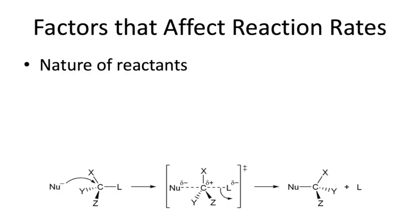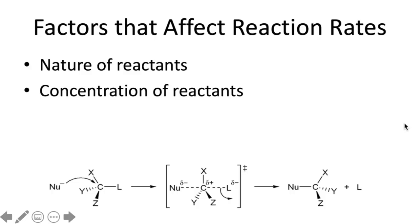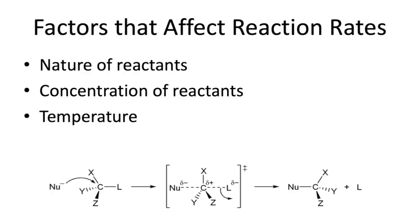We're not necessarily going to talk more about the nature of reactants, but it's important to realize that just the molecules that are actually reacting make a difference in the reaction rate. There are also things we can control without changing the molecules — like concentration. When we increase the concentration of reactants, they're going to collide more frequently, and that's why our reaction rate will increase. If we raise the temperature, a greater fraction of molecules have enough energy to overcome the activation barrier, and because they're moving more quickly they also collide more frequently.